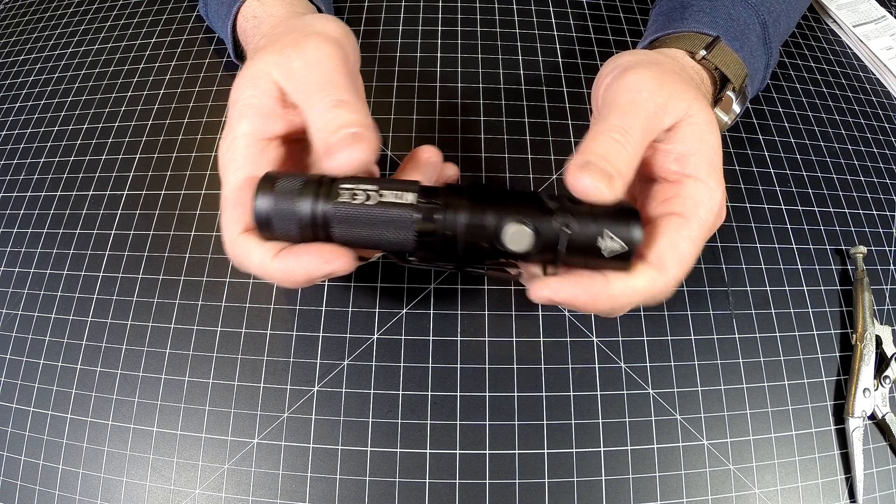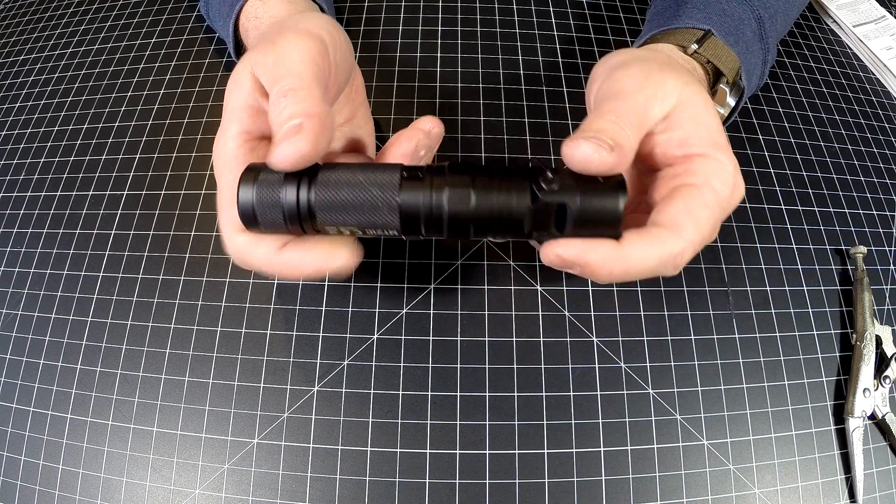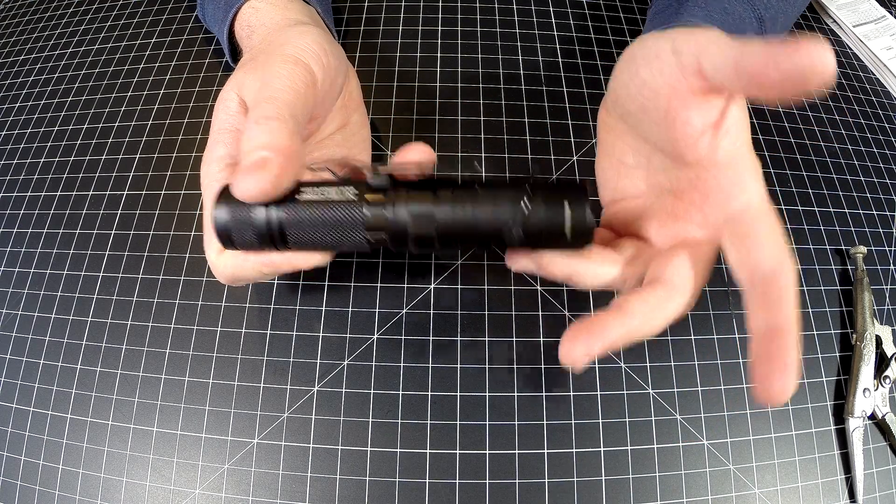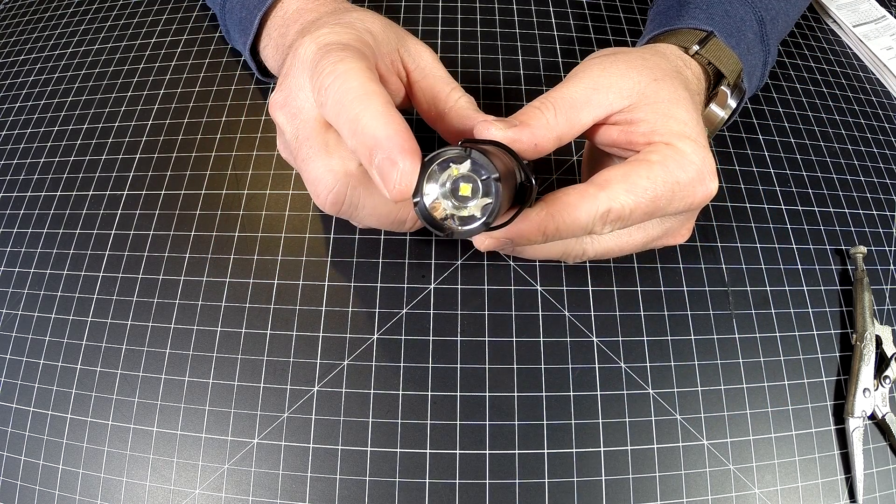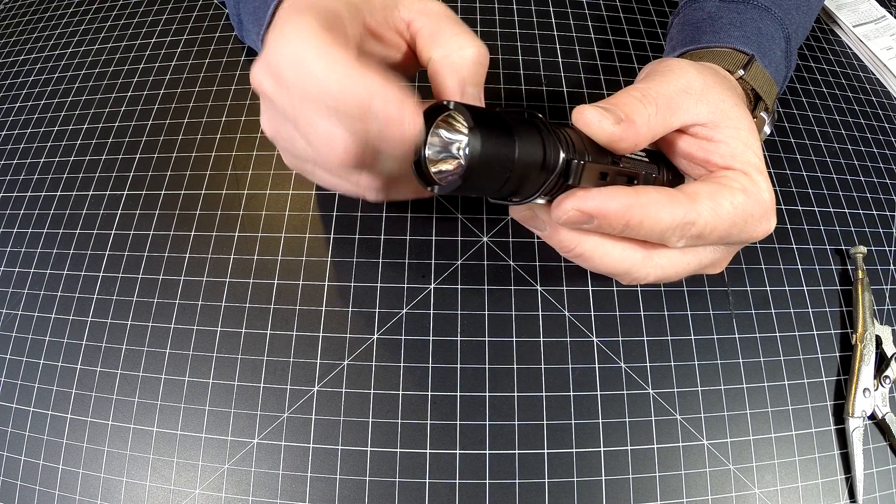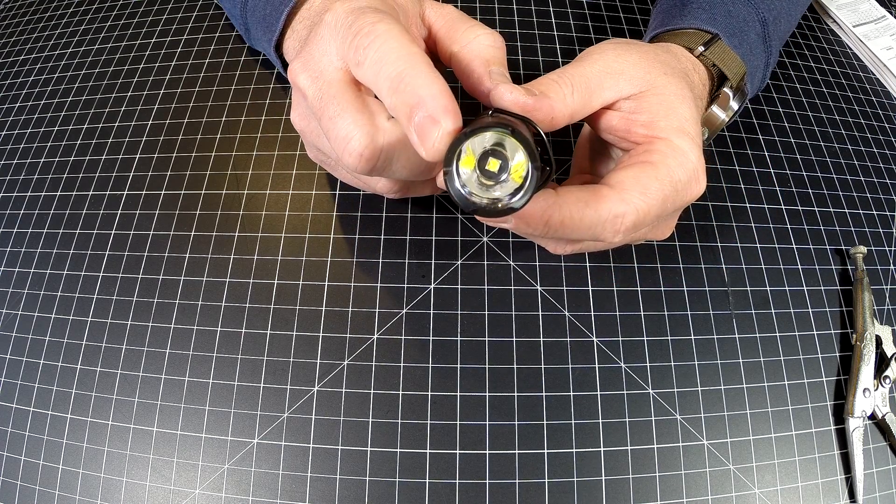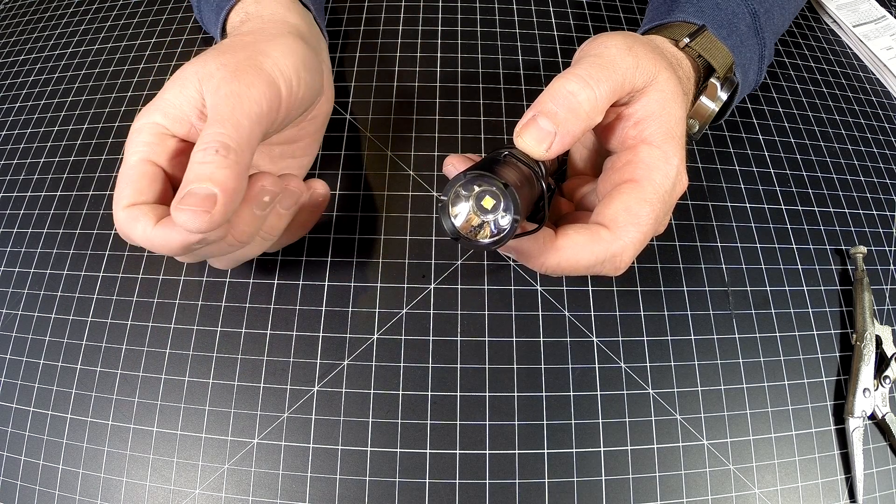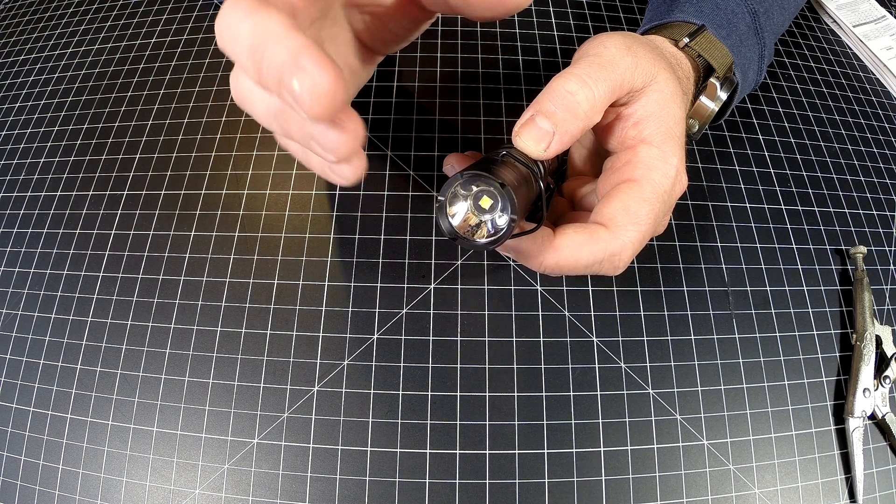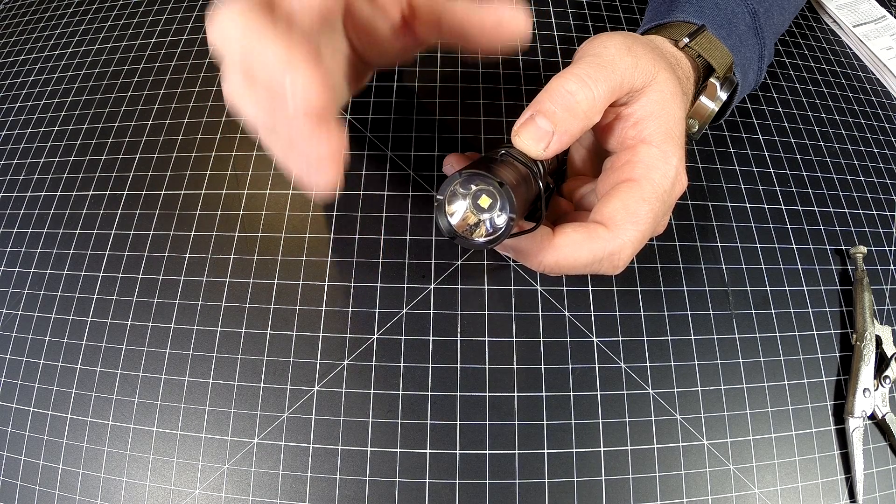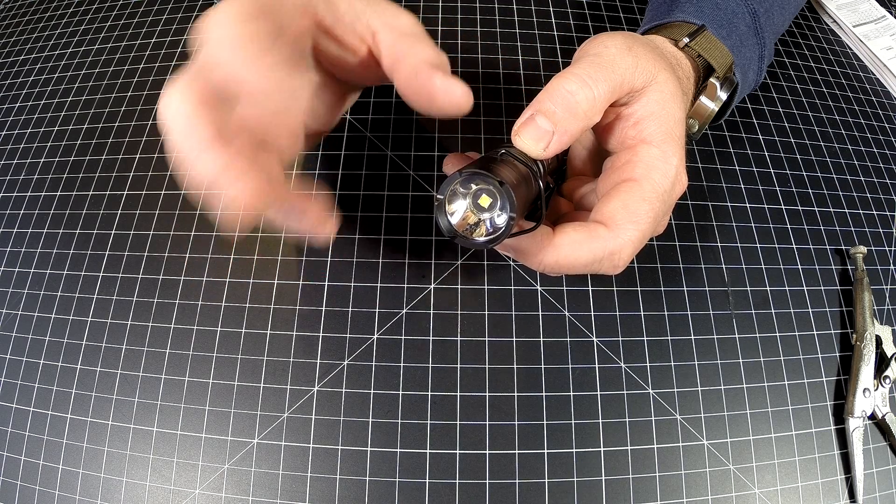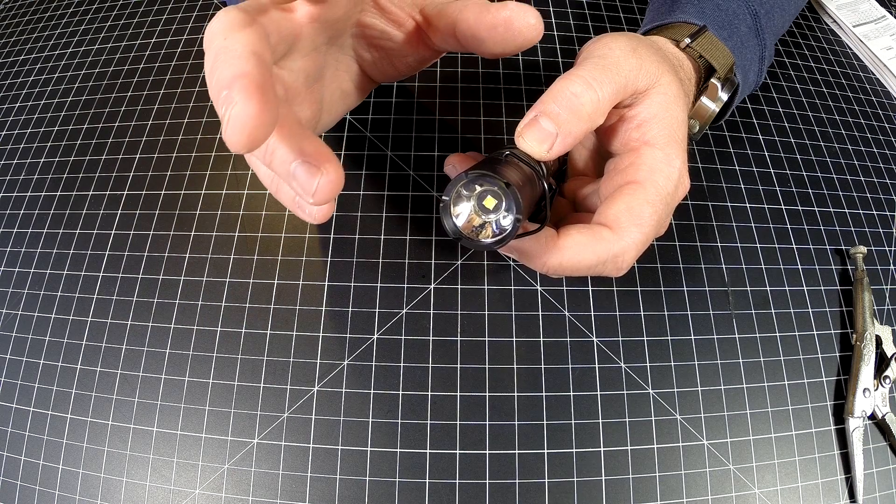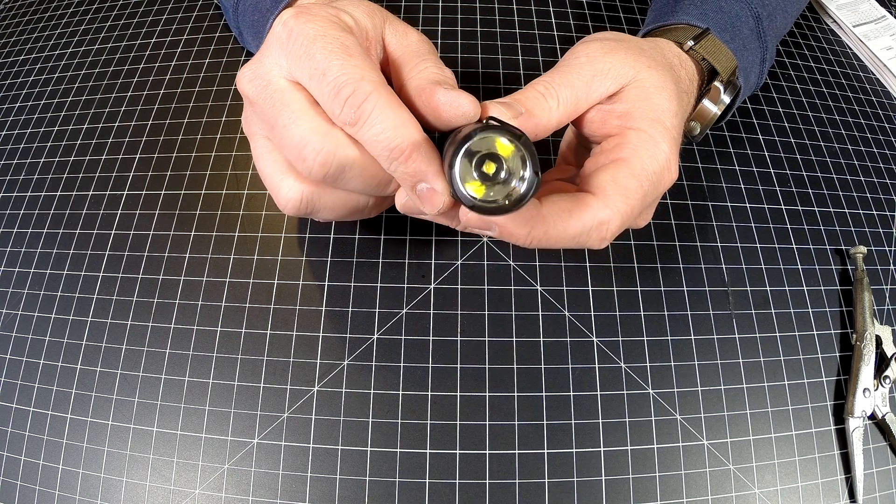It's got AR coating on the mineral glass lens, little crenulation up here, and a smooth reflector which is kind of a middle ground. It's got some spot and spill but it's not a super thrower and not a super flood. It's a very well-balanced light that'll light up a whole engine compartment.